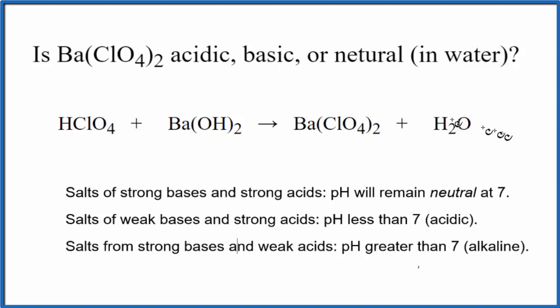To do that, we have to look at the neutralization reaction that produces the barium perchlorate. So we have perchloric acid and barium hydroxide, acid and a base. They react, neutralize each other. We have our salt here and water, neutralization reaction. Once we have this equation,